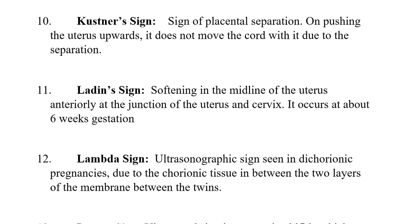Kastner's sign is a sign of placental separation: on pushing the uterus up, the cord does not move with it, indicating separation. Ladin's sign is softening in the middle of the uterus anteriorly, at the junction of the uterus and cervix; it occurs at about six weeks of gestation.